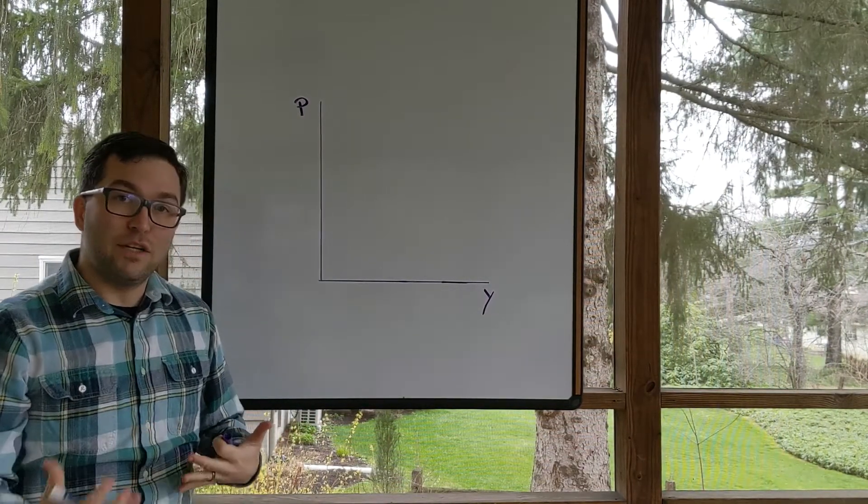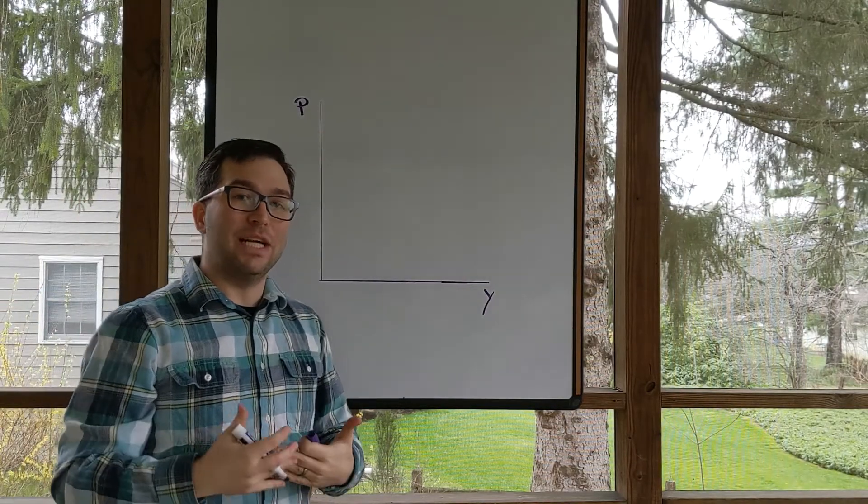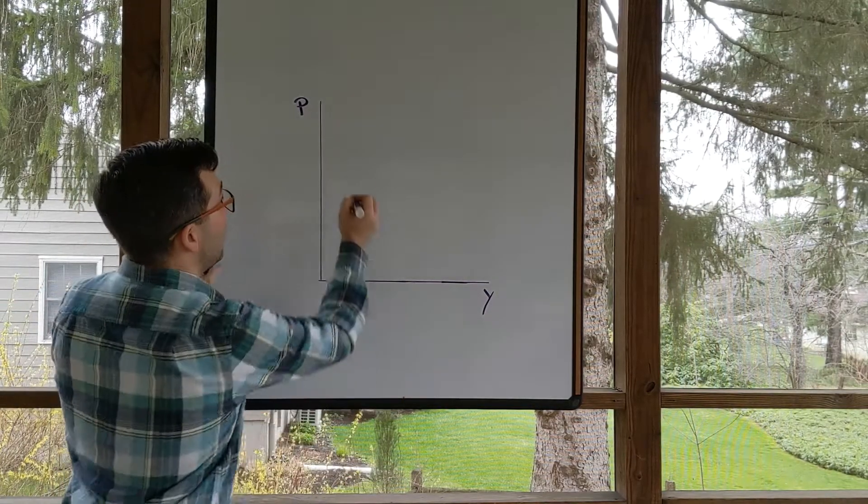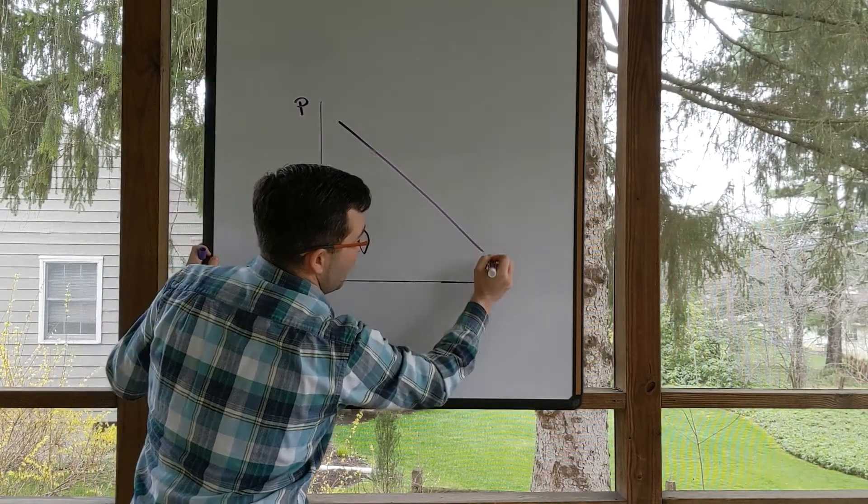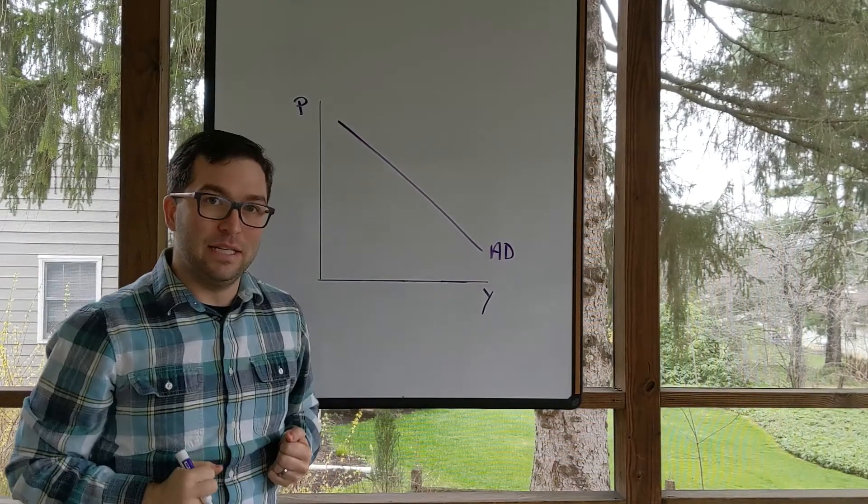Aggregate demand, just like a demand curve for oranges, is downward sloping. You can always think of D, aggregate demand, for downward sloping. So we're going to have a downward sloping aggregate demand curve. We're going to label this AD, aggregate demand curve.